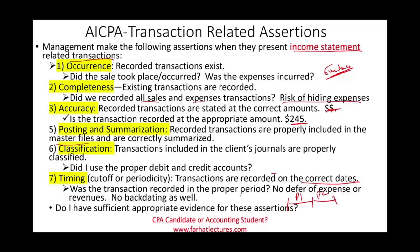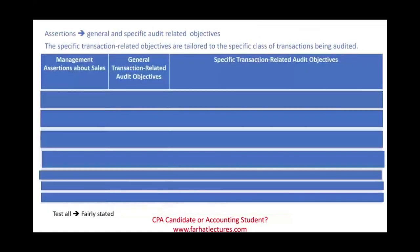Your job as auditor is to collect sufficient appropriate evidence about all these assertions before you are comfortable claiming that the account is fairly stated. When we have an assertion, from that assertion we generate the audit-related objective, which could be general and specific. Then our job is to create an audit program with audit steps that can test that assertion.